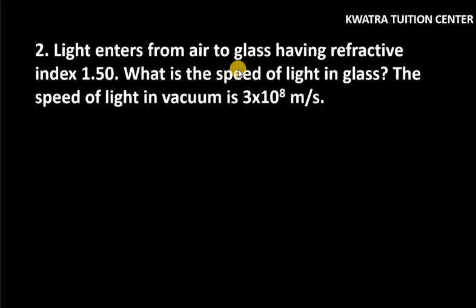So it says light enters from air to glass having refractive index of 1.50. What is the speed of light in glass? The speed of light in vacuum is 3×10^8 meters per second.